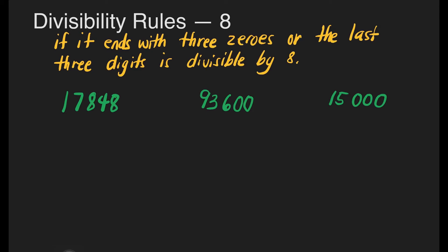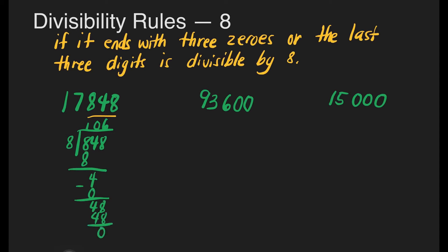We have 17,848 and the last 3 digits is 848. Let's divide: 848 divided by 8. How many 8s are there in 8? That's 1. 1 times 8 is 8. Bring down 4. How many 8s are there in 4? None — it's 0. 0 times 8 is 0. 4 minus 0 is 4. Bring down 8. How many 8s are there in 48? That's 6. 6 times 8 is 48. We don't have a remainder, so 17,848 is divisible by 8.